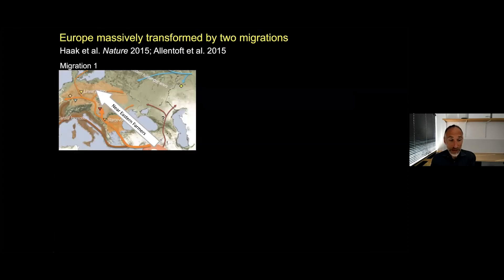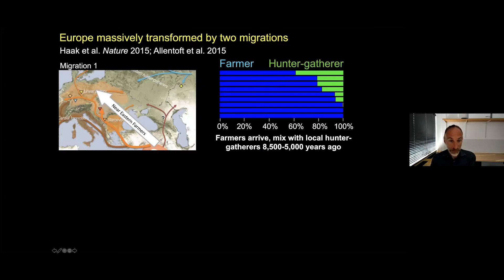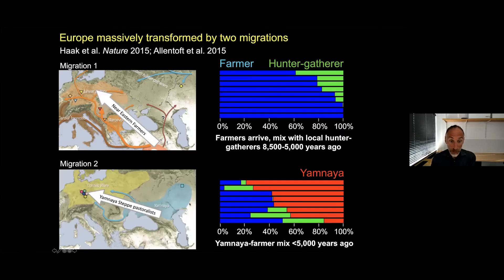To summarize: there's a first major migration of farmers from Anatolia into Europe after 8,500 years ago — a profound event that displaces about 80% of the local population. And then there's another very large-scale movement, not known before ancient DNA, that in some places replaces 70% of the ancestry — like in Germany — from people from the steppes north of the Black and Caspian Sea.